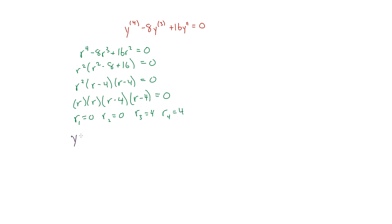So the general solution to this equation is going to be c1 e to the zero x plus c2 x e to the zero x, and the same goes for r3 and r4.